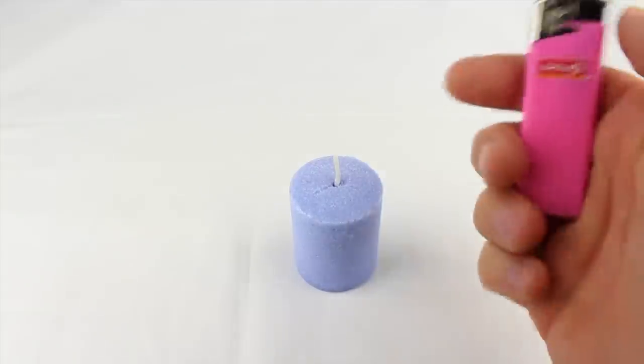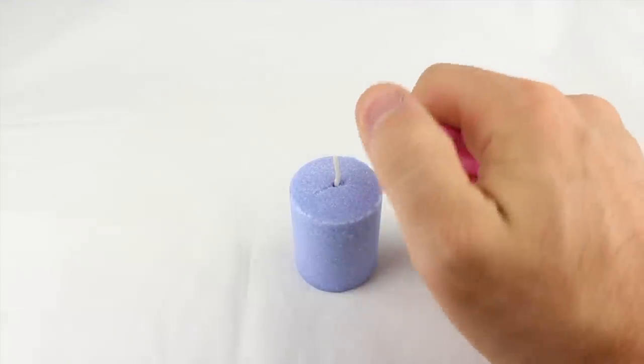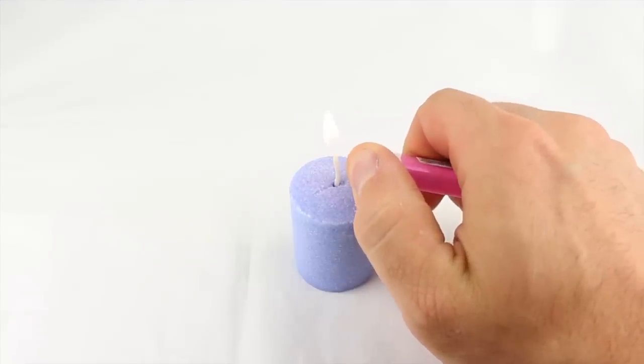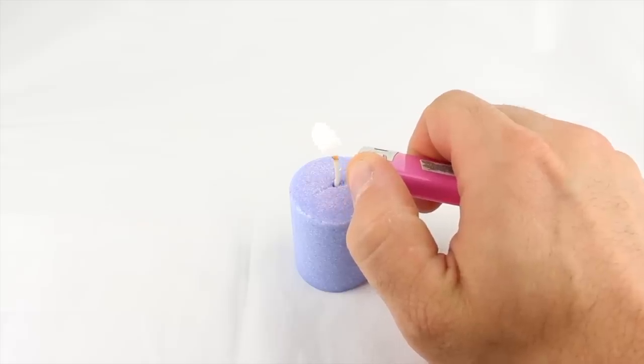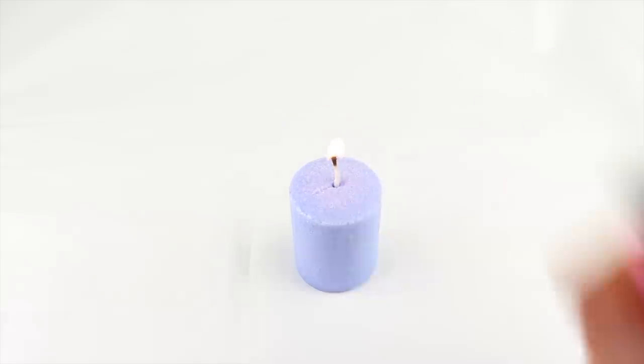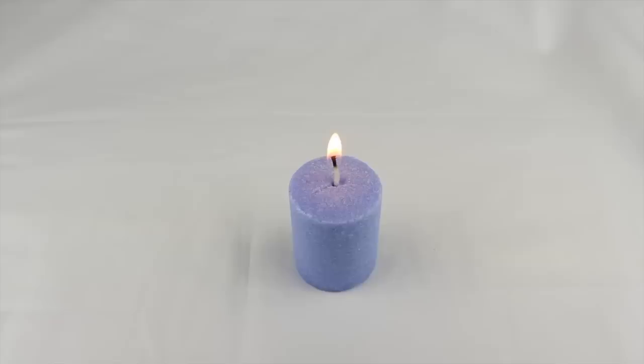First thing that we're going to have to do is light this candle. If you're not 18, make sure you get a parent's permission. So let's go ahead and light it. And let's turn off the lights for the mood effect.